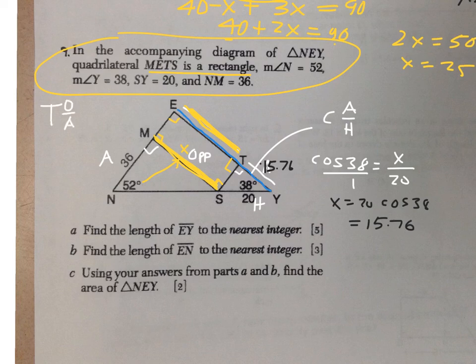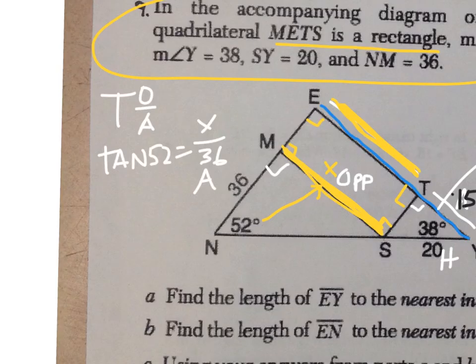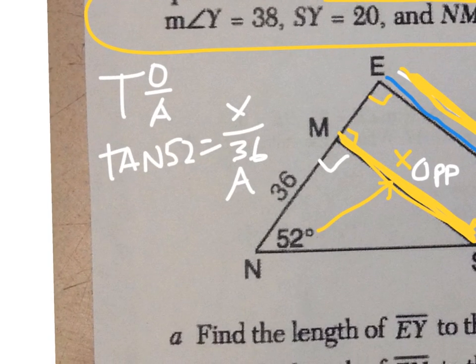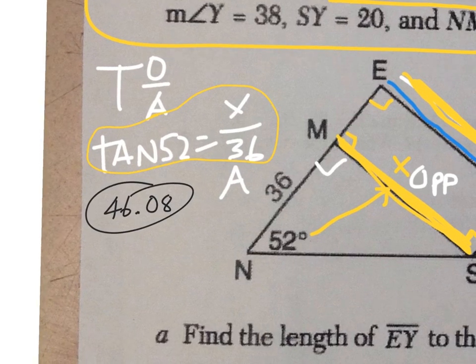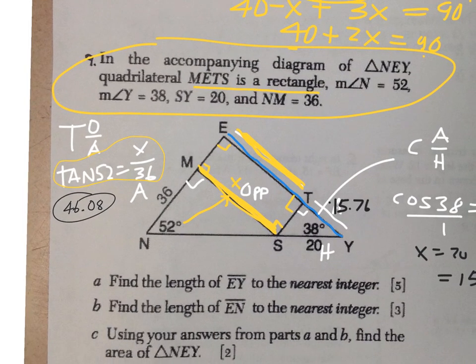So I'd have to use TOA to figure out what MS is. So it would be the tangent of 52 equals opposite over adjacent. I'm going to take that equation and cross-multiply and get 36 times the tangent of 52 which is about 46.08. So keeping track of what I just found out I know that these pieces both are 46.08.